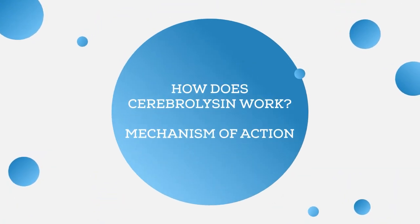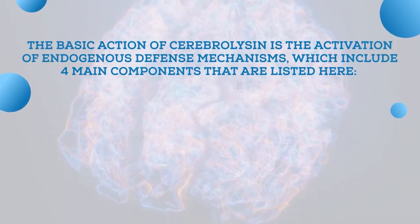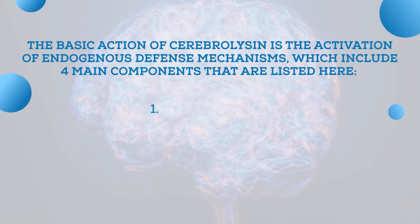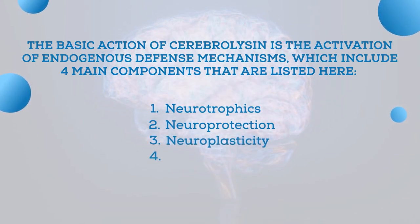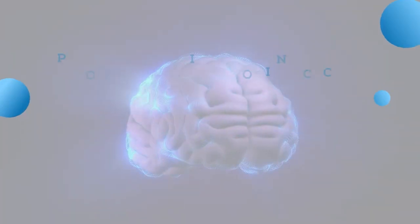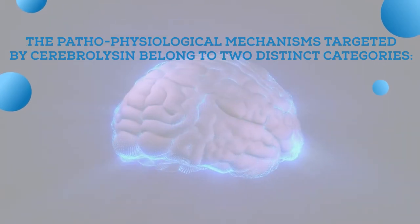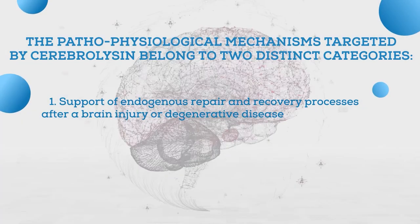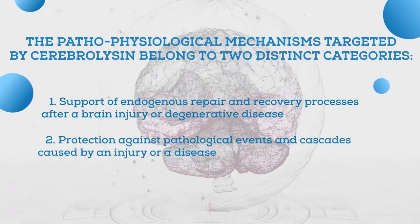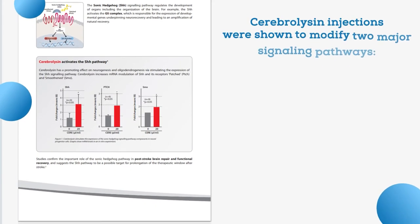The basic action of Cerebrolysin is the activation of endogenous defense mechanisms, which include four main components: number one, neurotrophics; number two, neuroprotection; number three, neuroplasticity; and number four, neurogenesis. The pathophysiological mechanisms targeted by Cerebrolysin belong to two distinct categories: support of endogenous repair and recovery processes after brain injury or degenerative disease, and protection against pathological events and cascades caused by an injury or disease.